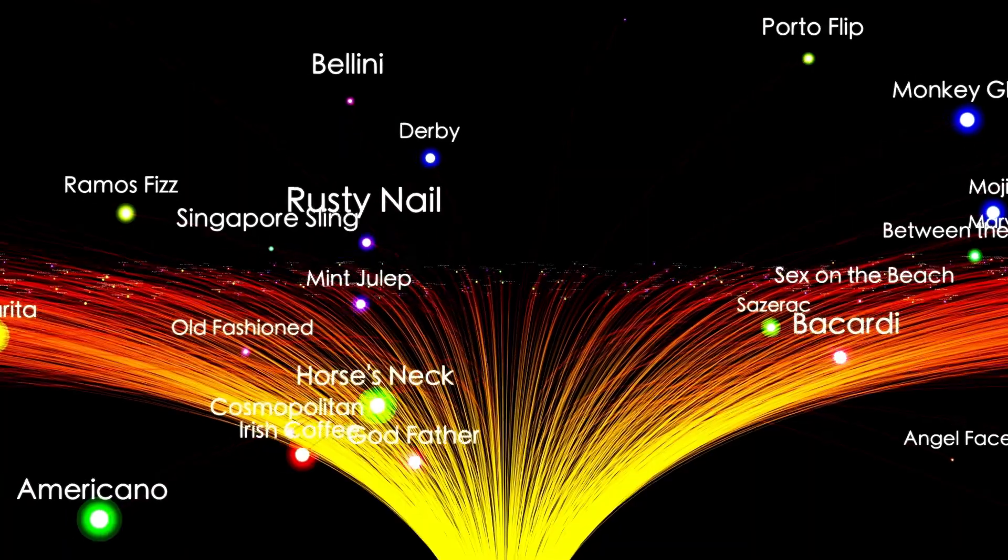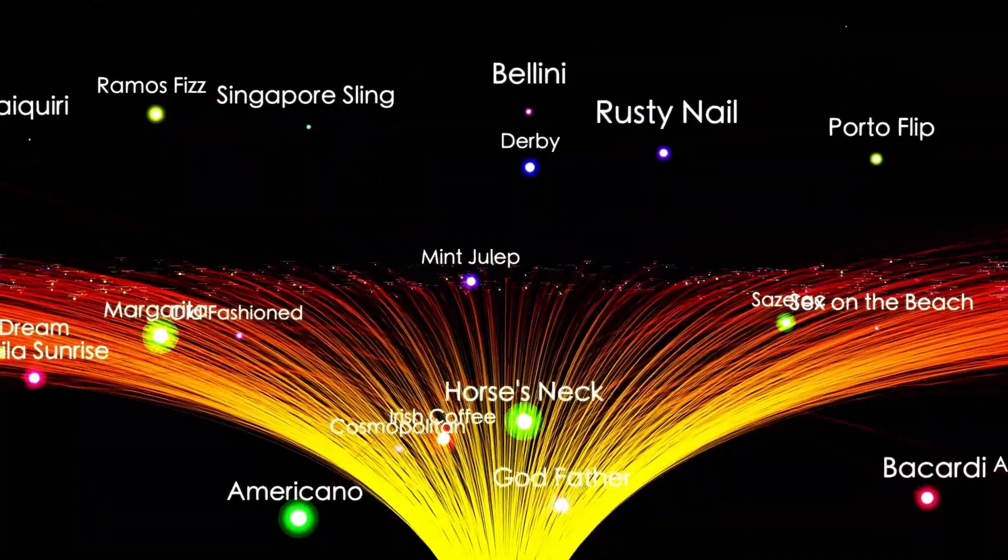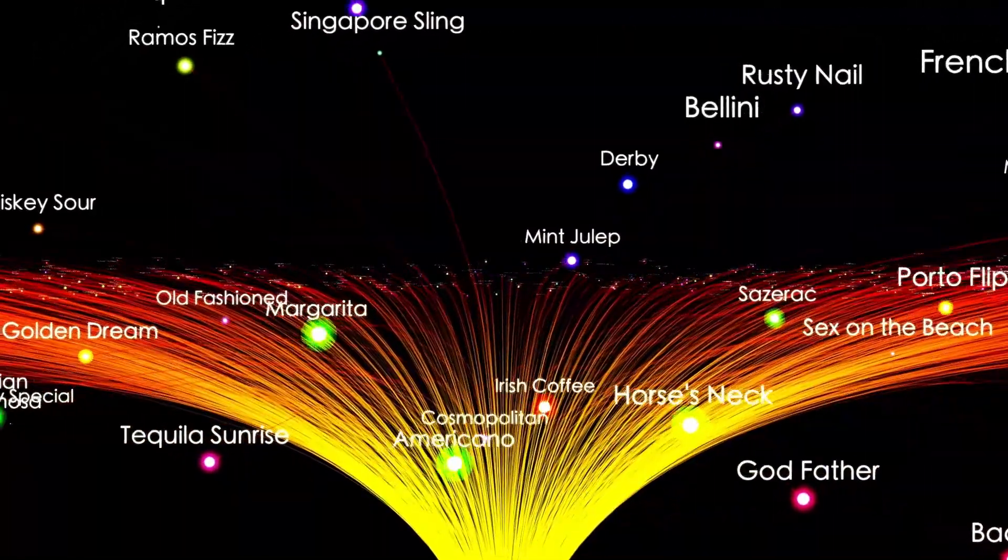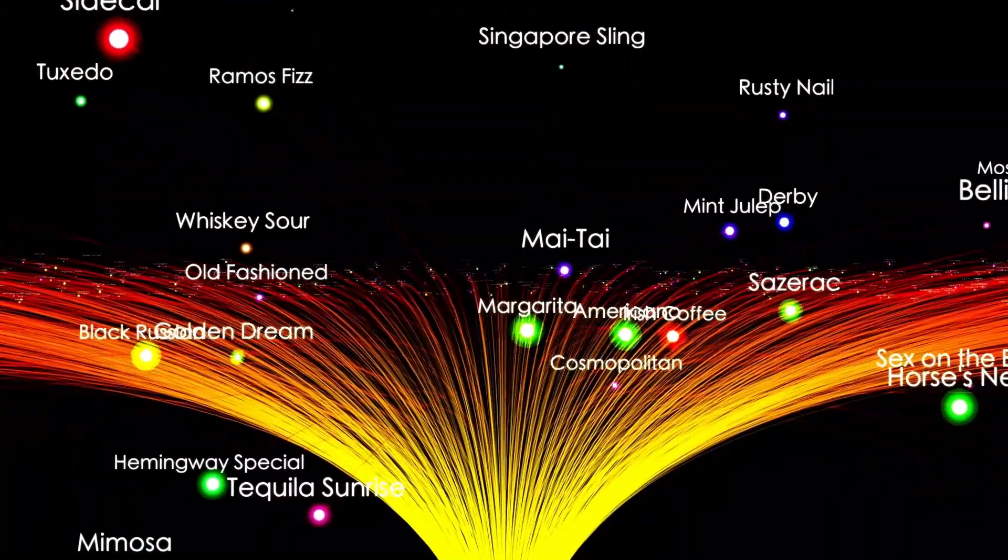According to this model, the universe consists of various components: dark energy, dark matter, normal matter like stars, planets, and gas, neutrinos, and photons.